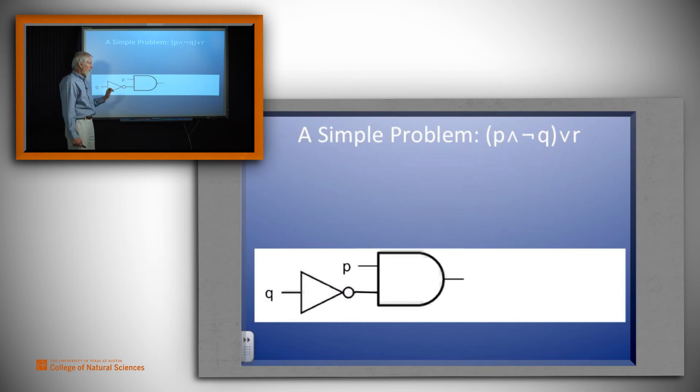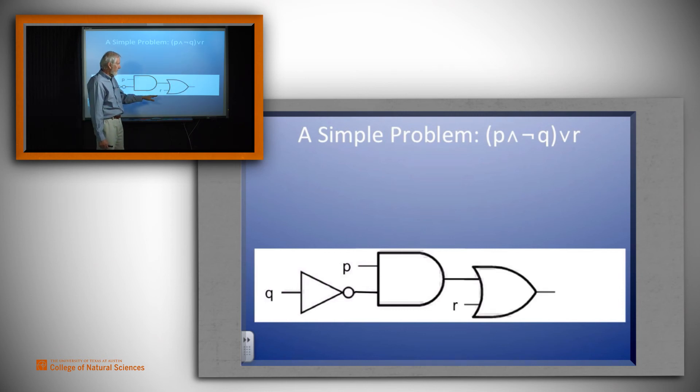If we do a conjunction, an and of that with P, then we have coming out of here P and not Q. The only thing left that we have to do is to push that through the OR gate with R and now we have at our end P and not Q or R.